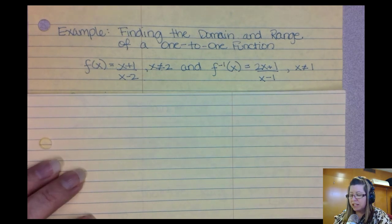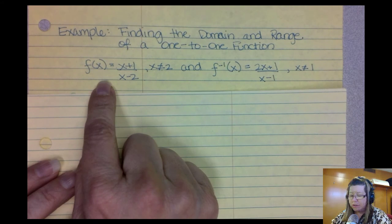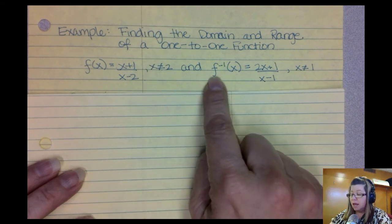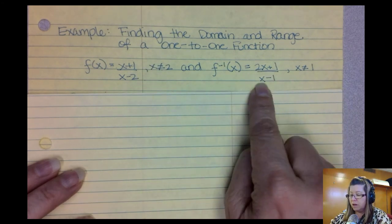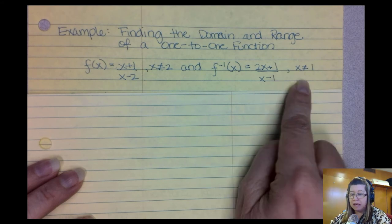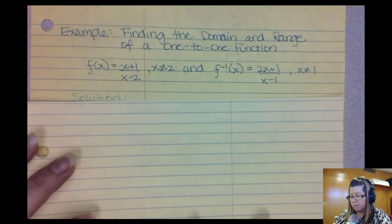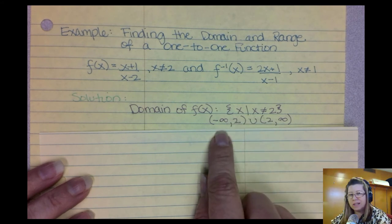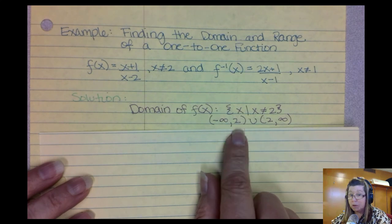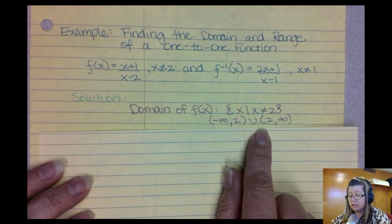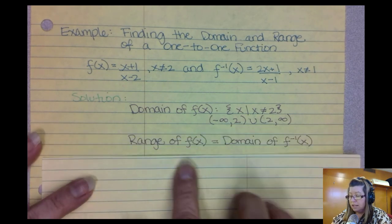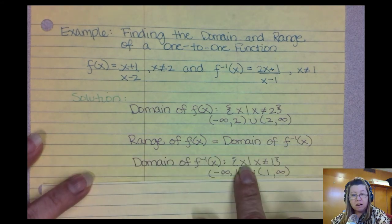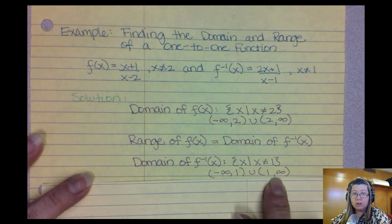Let's summarize the domain relationships. Our original function x plus 1 over x minus 2 has domain all x such that x does not equal 2 — in interval notation, negative infinity to 2 union 2 to infinity. The range of our function is the domain of the inverse, which is all x such that x does not equal 1. So the domain of our function is all x except 2, and the domain of our inverse is all x except 1.